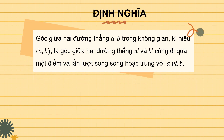Cô có định nghĩa như sau: Góc giữa 2 đường thẳng A và B trong không gian, ký hiệu là AB, là góc giữa 2 đường thẳng A' và B' cùng đi qua 1 điểm và lần lượt song song hoặc trùng với A và B.